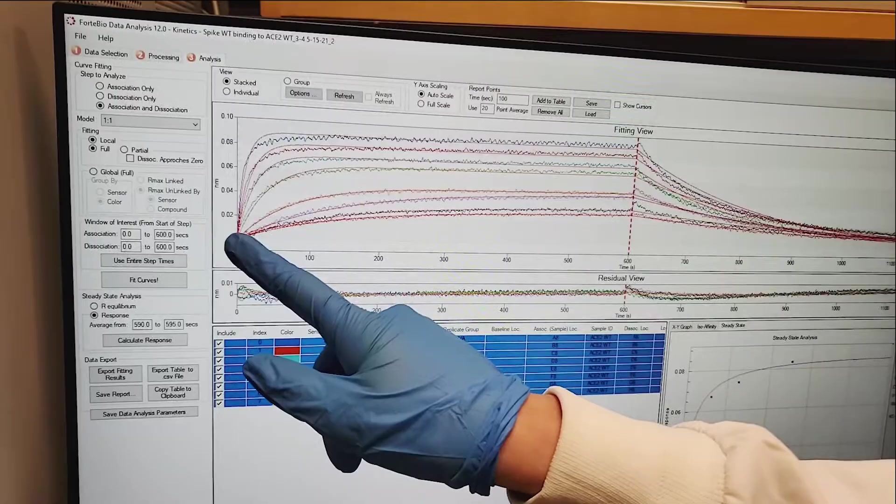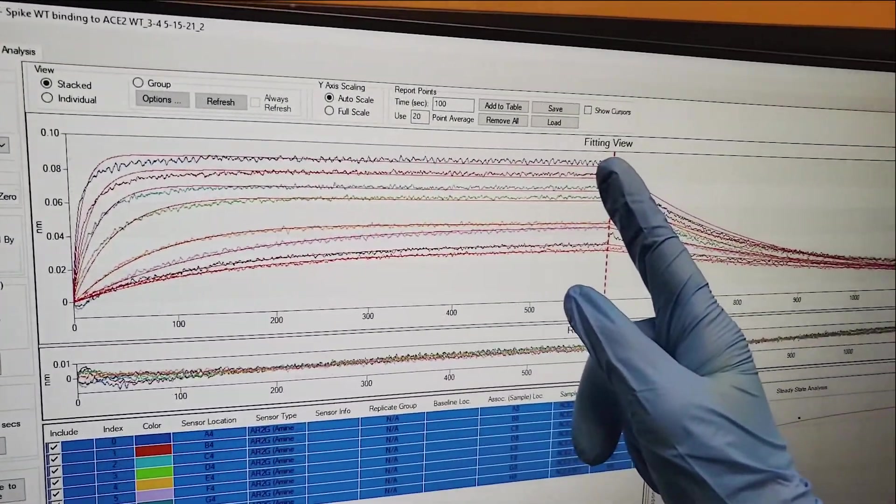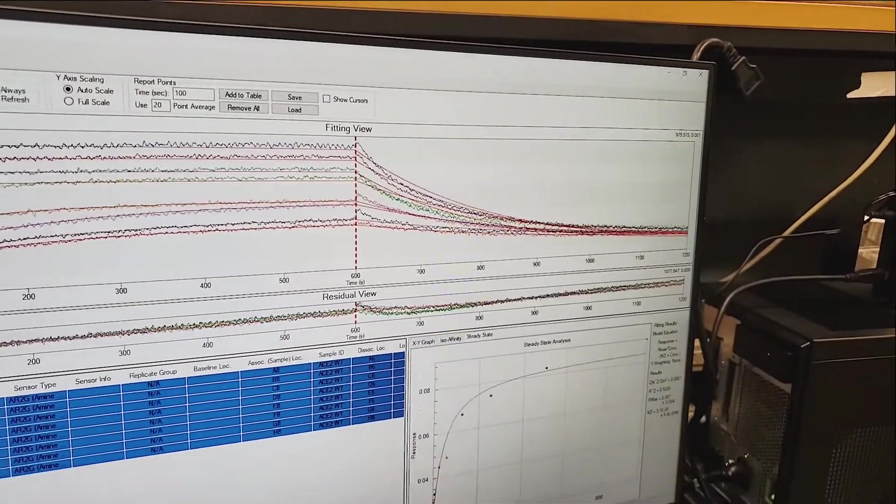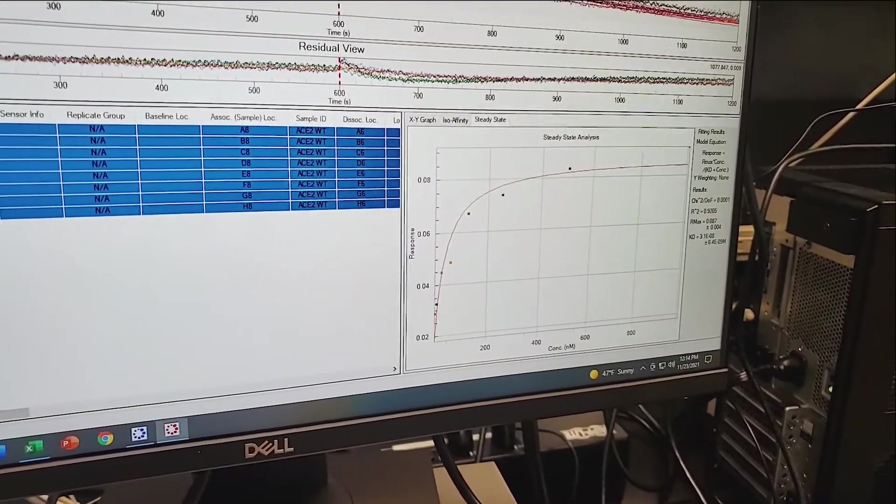As you can see, you can measure a K-on value, or a rate of association, as well as a K-off value, or a rate of dissociation, to generate a binding curve, or saturation curve, in which a Kd value can be measured.